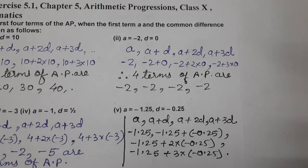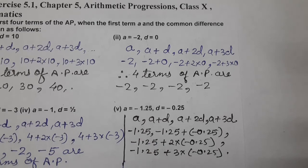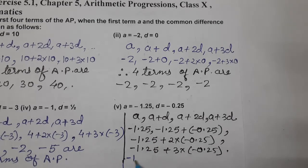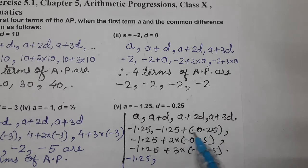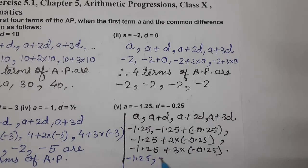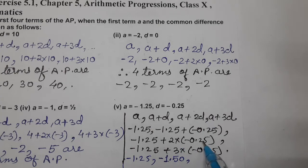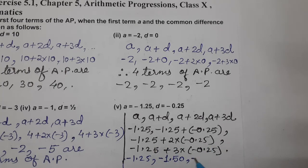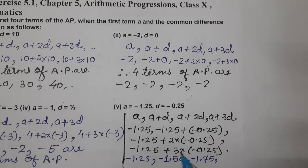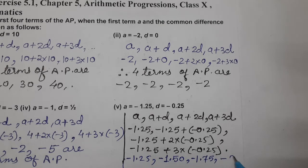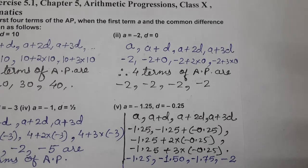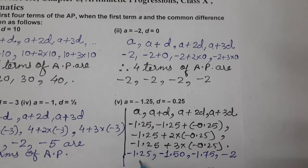So, calculation kar lete hain. First term will remain as it is, minus 1.25 only. So, first term is minus 1.25. Second, minus minus plus sign, so minus 1.50. Third term, 2 into 0.25, 0.50, 0.50 and minus 0.50 and minus 1.25. So, 1.75, so minus 1.75. And the last one, 25, 3 or 75, 0.75, 0.75 and 1.25, 2, so minus 2. So, these are the four terms of it. These are the four terms of AP, or four terms of AP.